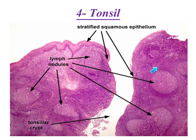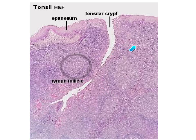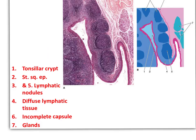Here we have lymphatic nodules with germinal centers. This is the non-keratinized stratified squamous epithelium and this is the tonsillar crypt. These are the lymphatic nodules arranged around this crypt. In between them we have diffuse lymphatic tissue formed of lymphocytes, plasma cells, and macrophages. This is a very nice picture for the structure of the tonsil.